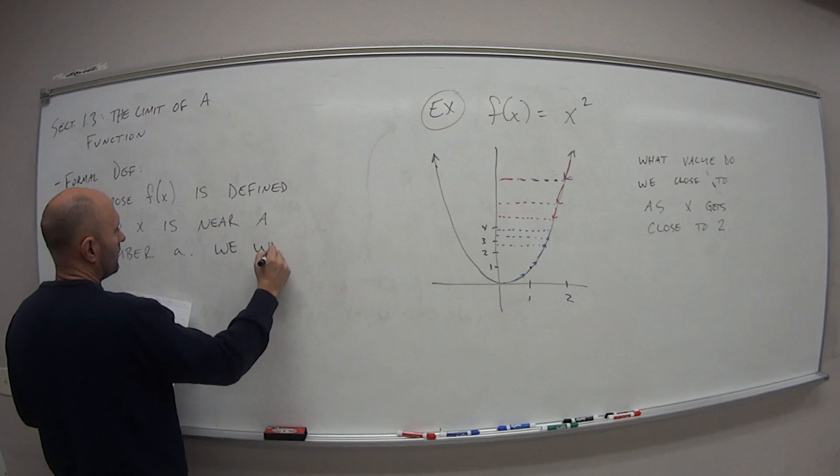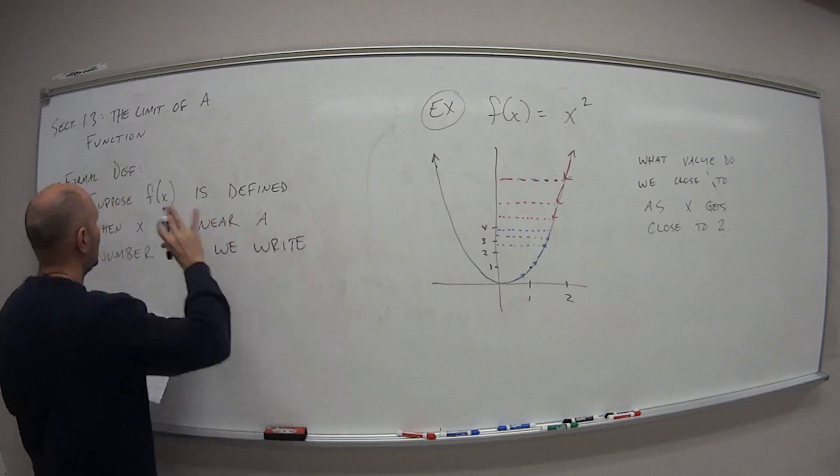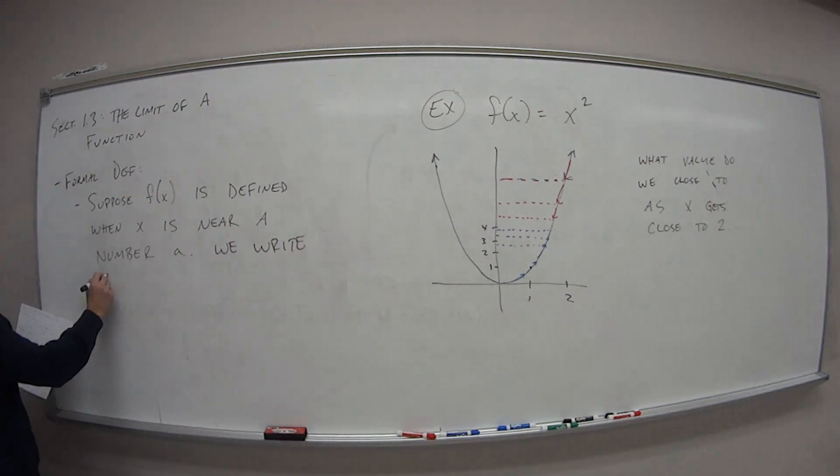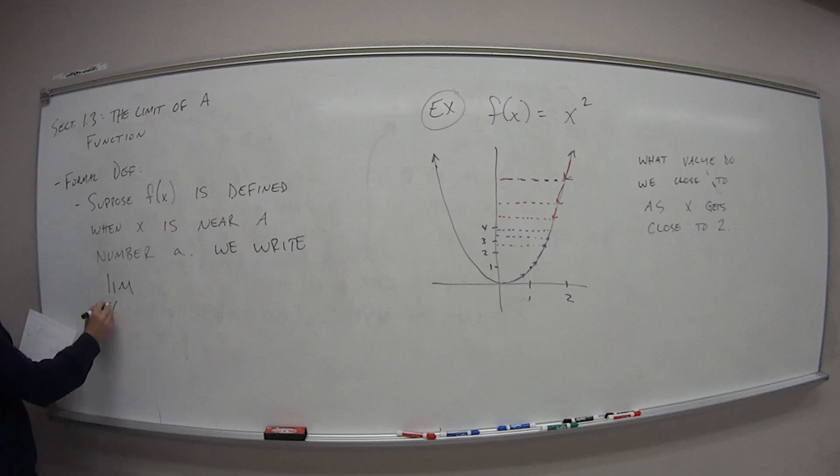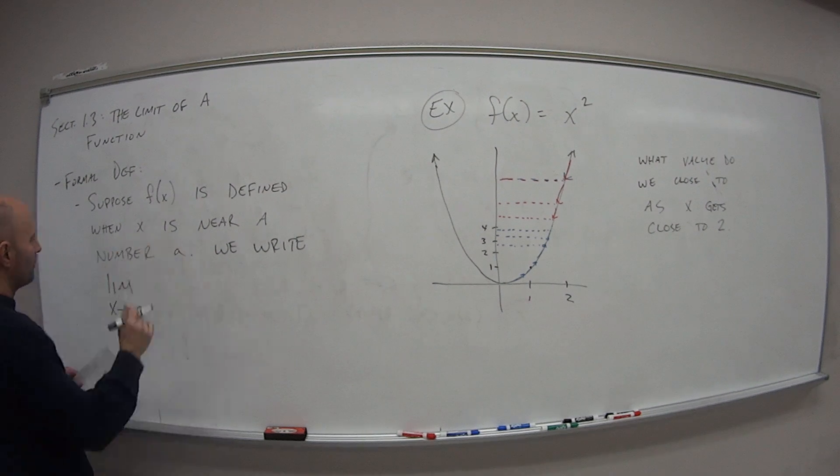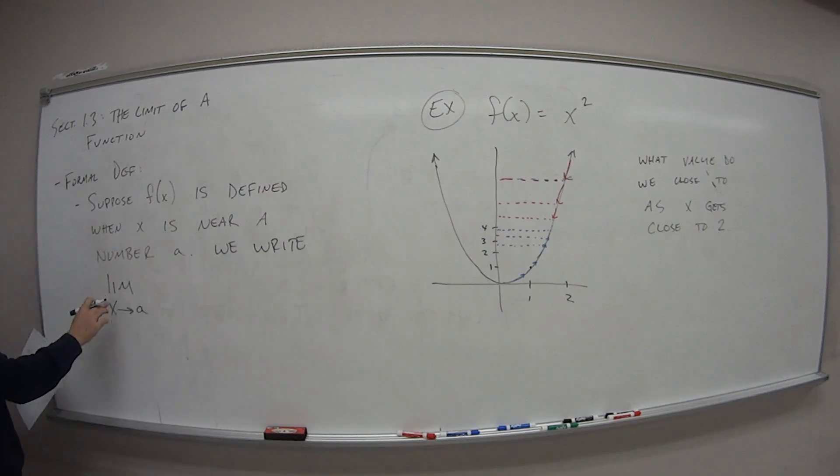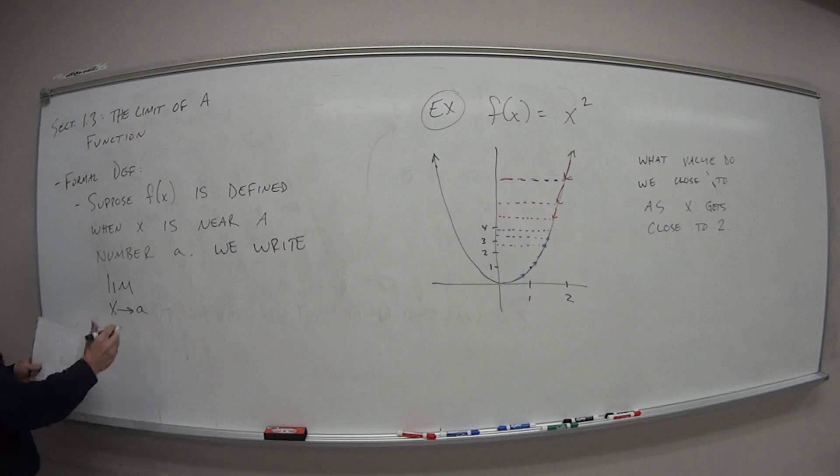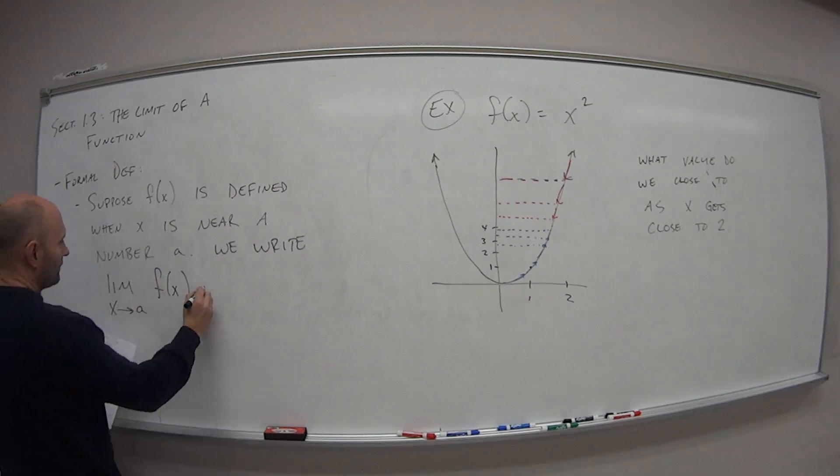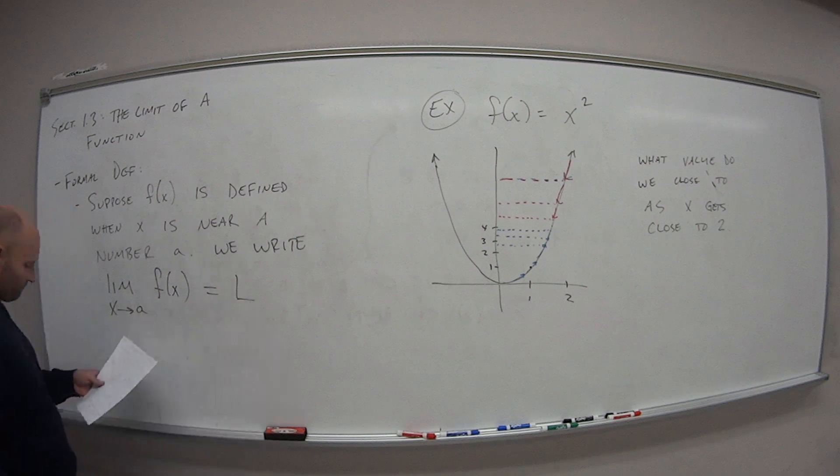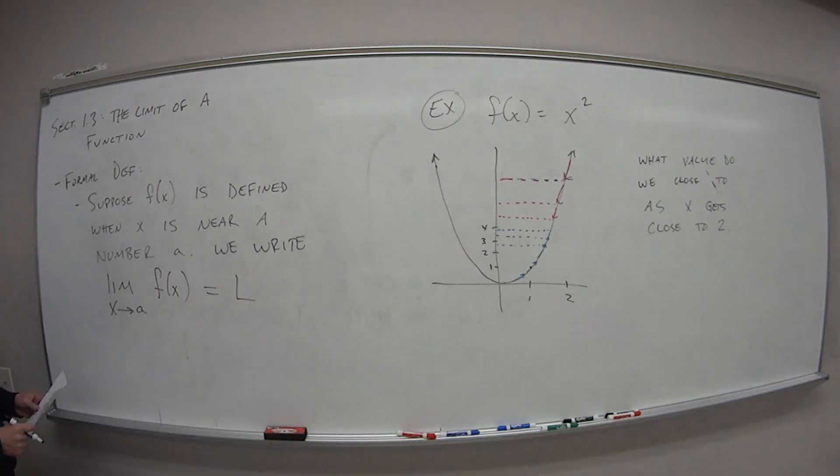again, this is the formal definition. The limit, LIM for short, then we have this notation here, x with an arrow towards this number a. So the limit as x approaches a of some function f of x is equal to L, whatever that limit might be.